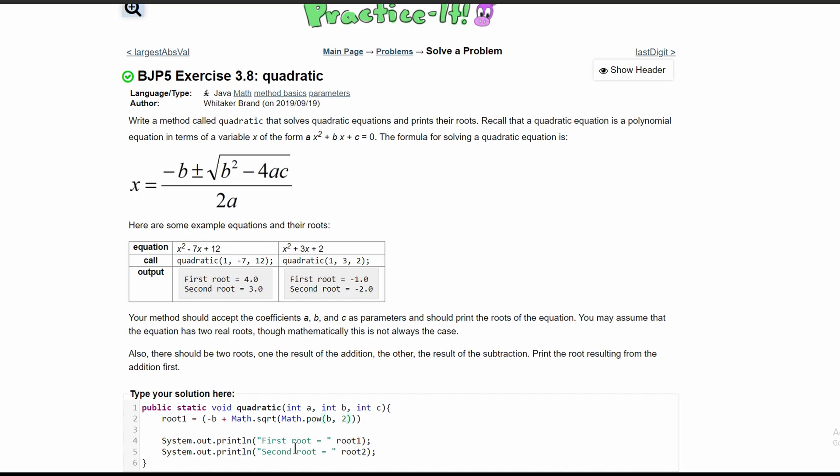Next, we are going to have negative 4 times a times c, still in our square root. Now we are going to break out of our square root, and then we're going to break out of our numerator, and divide this by 2 and divide it by a.